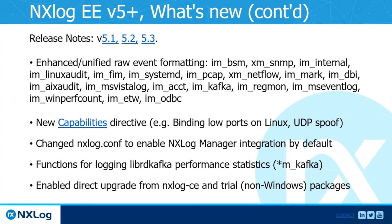Going through the release notes for our latest versions 5.1, 5.2, and 5.3, we see a lot of bug fixes and improvements in functionality. Many input modules have been enhanced, and the raw event formatting has been refactored — you can see a list of these modules at the top. There's also a new directive for Linux capabilities, allowing a non-privileged account to bind low ports (below 1024) on Linux. If you have a TCP or UDP listener on port 514, this directive will be quite useful.